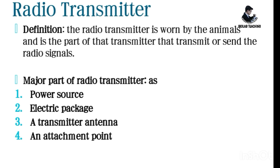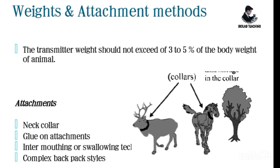The fourth component is an attachment point, which allows us to attach the transmitter to the animals. Regarding weight and attachment methods, the transmitter weight should not exceed 3 to 5 percent of the body weight of the animal. For example, if an animal weighs 100 grams, the transmitter should weigh only 3 to 5 grams.